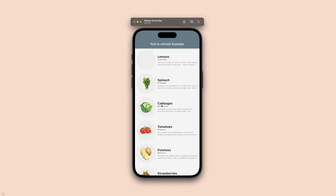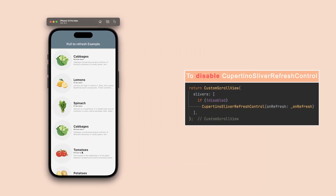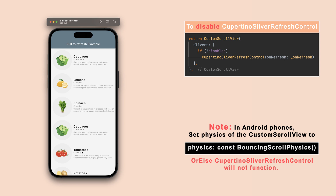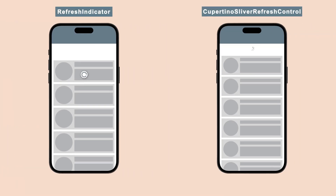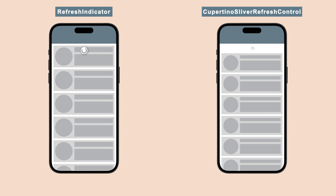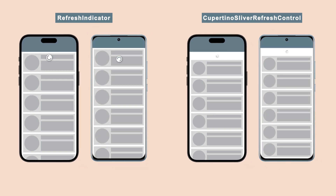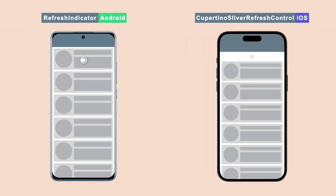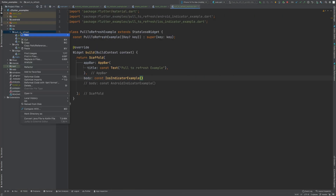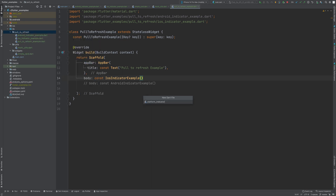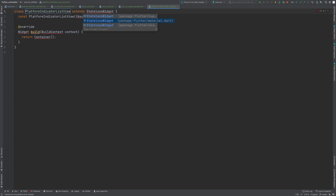To disable the pull-to-refresh with this approach, we can simply render the widget conditionally. We've looked at two ways to implement pull-to-refresh without any third-party packages. The RefreshIndicator displays an Android style indicator on both iOS and Android devices, while CupertinoSliverRefreshControl renders an iOS style indicator. But what if we need different styles depending on which device the app runs on — iOS style for iOS devices and Android style for Android devices?